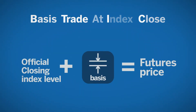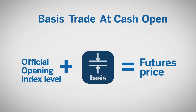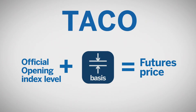Basis Trade at Index Close, or BTIC, permits parties to trade at a differential, or basis, to an eligible futures contract's underlying cash index closing level, which is not-yet-known. Basis Trade at Cash Open, or TACO, permits parties to trade at a differential, or basis, to an eligible futures contract's underlying cash index special opening quotation, which is not-yet-known.